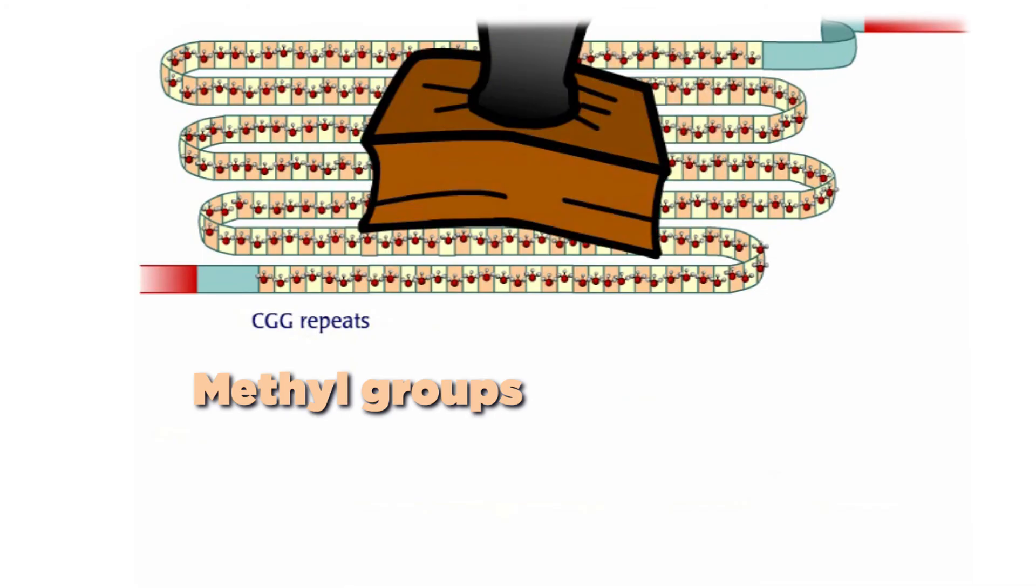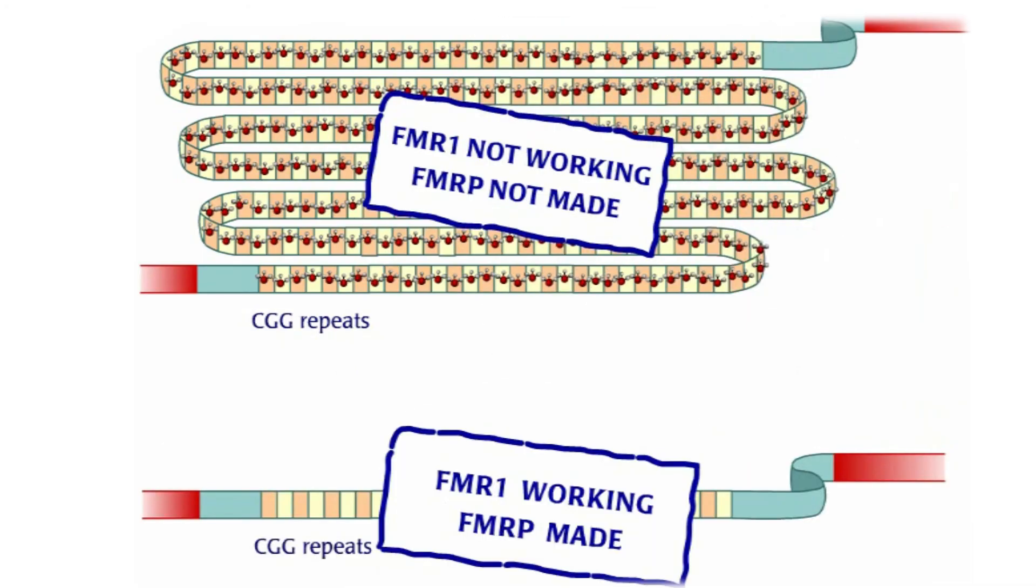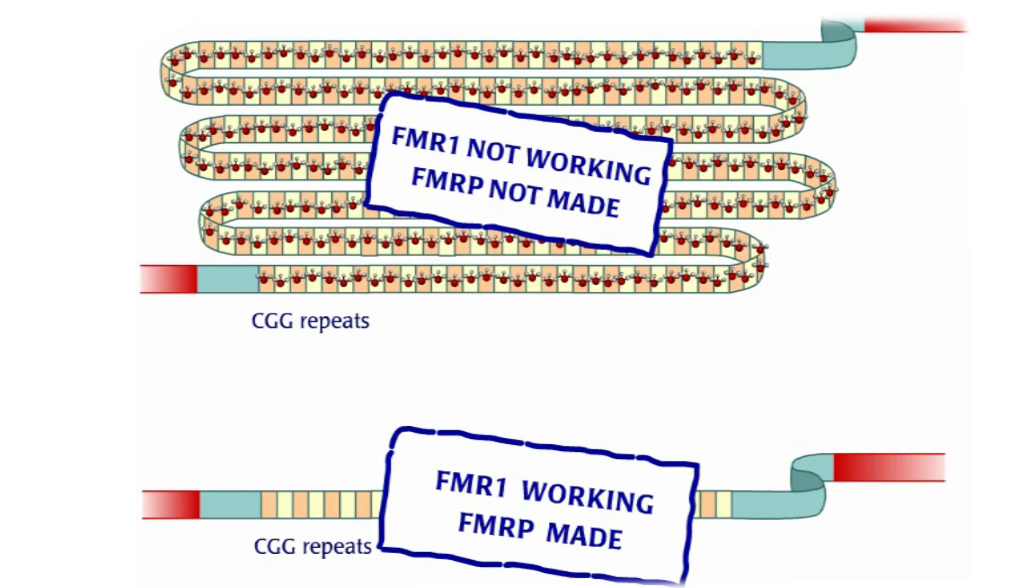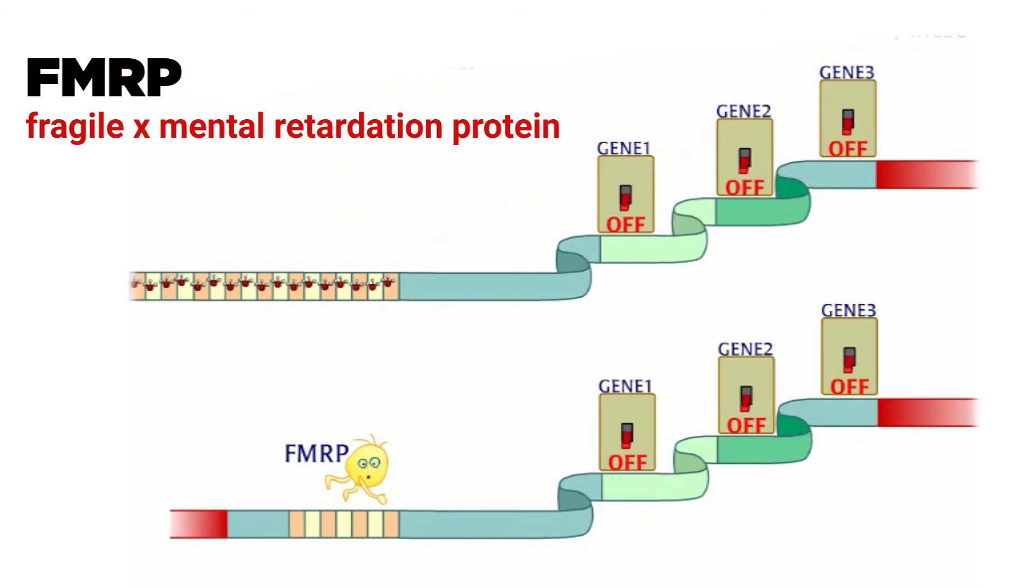The added methyl groups inactivate or turn off the gene and the gene fails to produce its protein, FMRP, Fragile X Mental Retardation Protein.